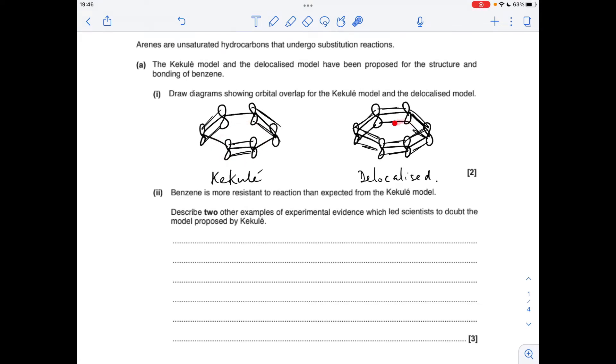Basically what they're looking for is in the Kekulé structure you overlap three alternating pairs of p orbitals to create the pi bonds, whereas in the delocalized model all six of the p orbitals will overlap and that'll create the delocalized ring of pi electrons above and below the ring.